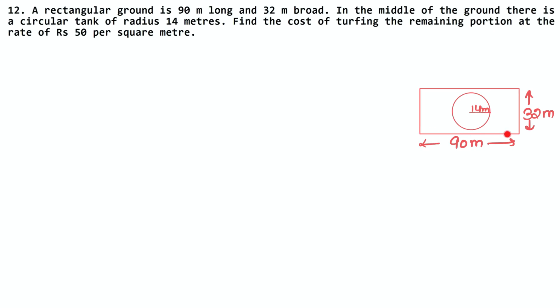What is the big shape? It is a rectangle. What is the small shape? It is a circle. If we remove the small area from the large area, then we will get the remaining area.